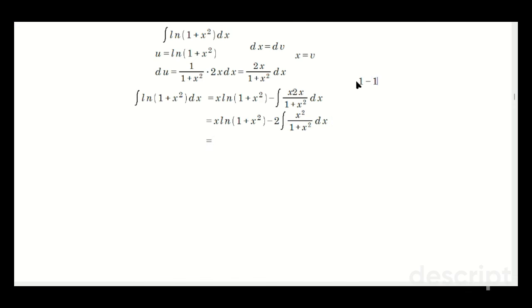But what you can do is a small trick, which is that 1 minus 1 is equal to 0, right? You're always allowed to add 0, or a form of it as needed to write an expression. So that takes the following form here: x ln(1+x²) minus 2, and the integral is going to be x²+1-1. Again, this red part is just 0, that's why I can do that.